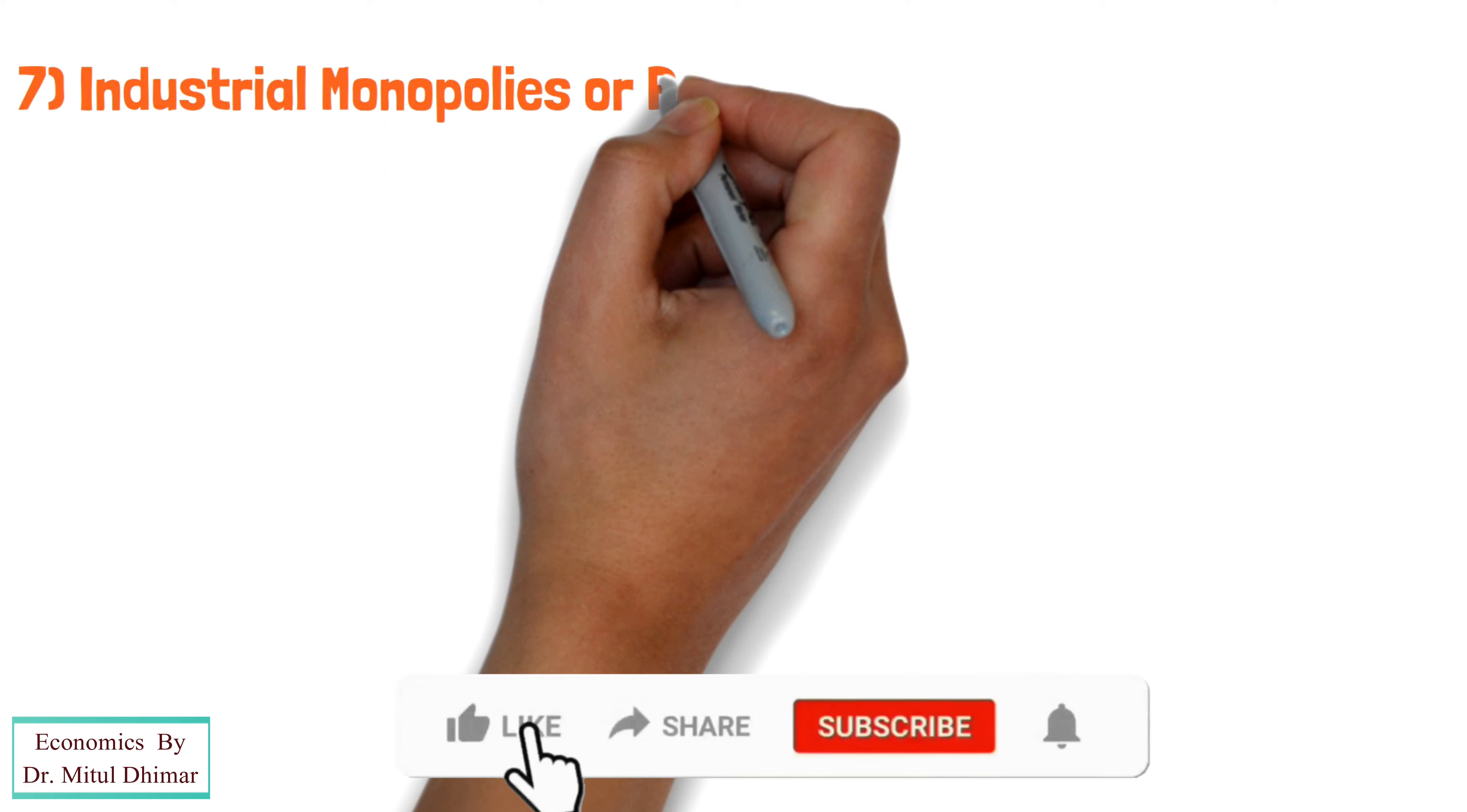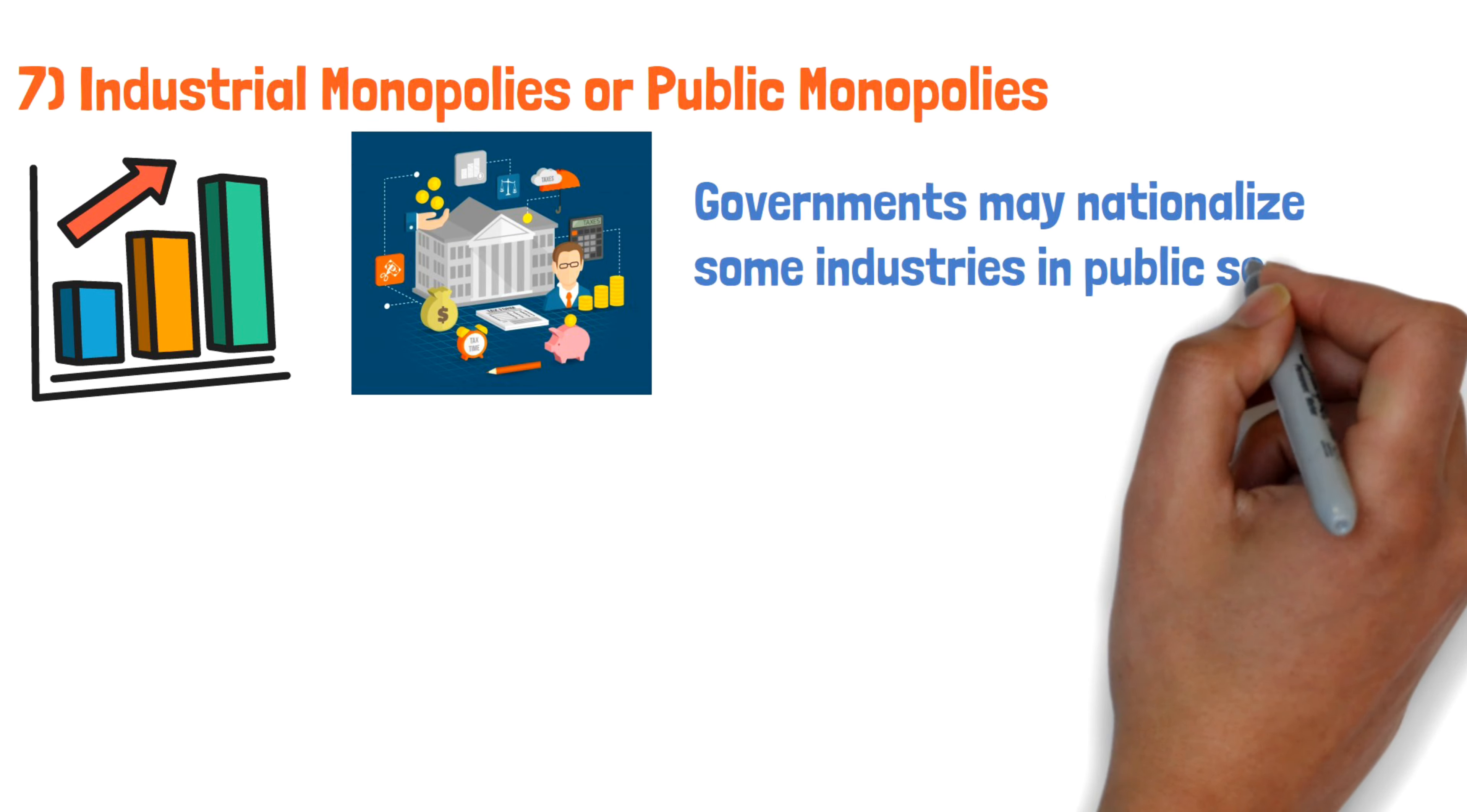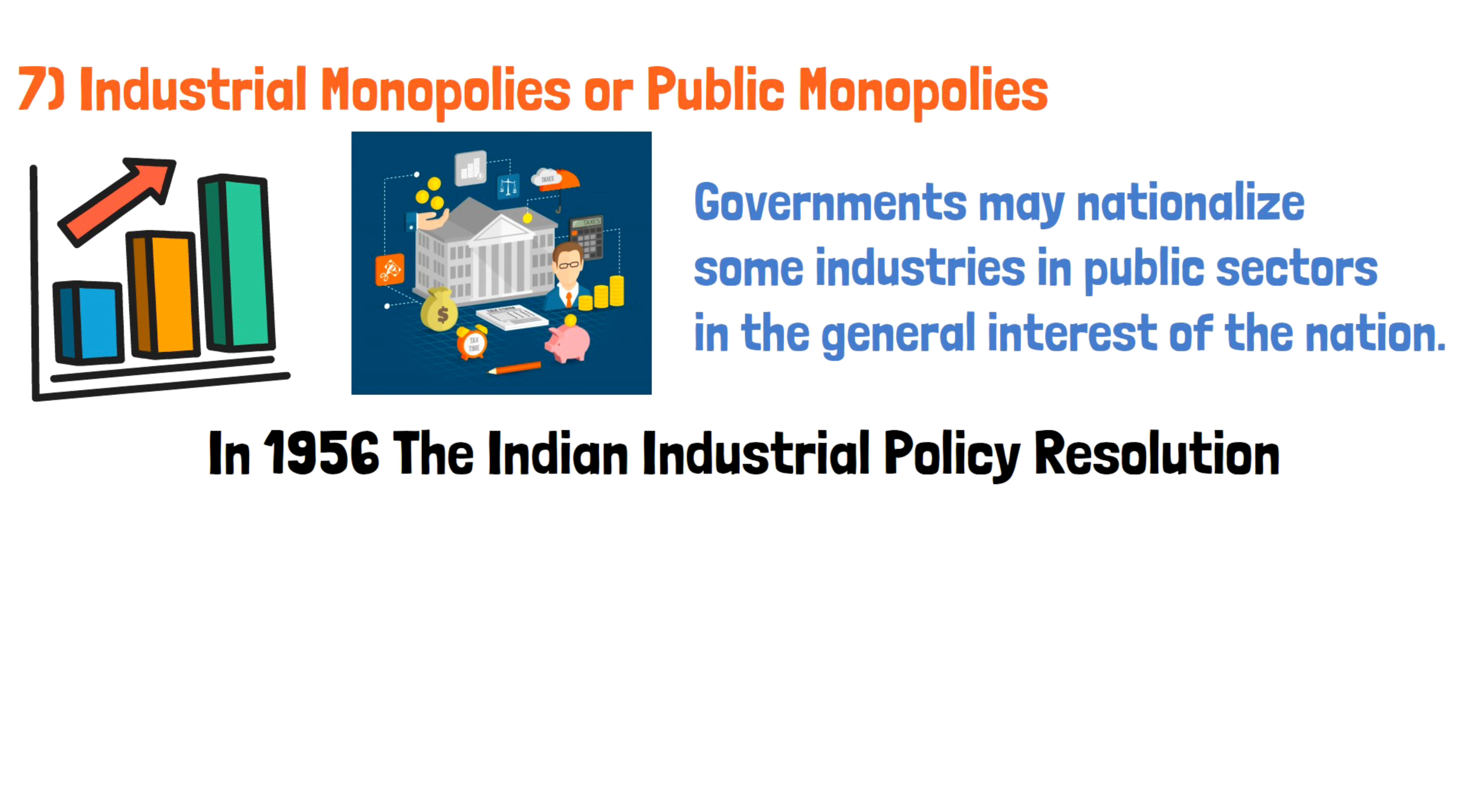7. Industrial Monopolies or Public Monopolies. Industrial or public monopolies arise as a result of government action. Governments may nationalize some industries in public sectors in the general interest of the nation. In 1956, the Indian Industrial Policy Resolution, for example,